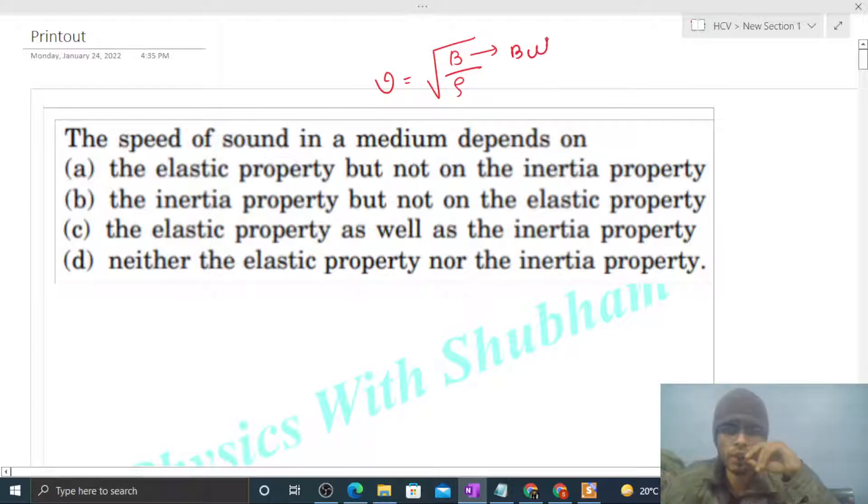B is the bulk modulus of the medium and rho is the density of the medium. Now, what is this bulk modulus? That is simply change in pressure divided by fractional change in volume.